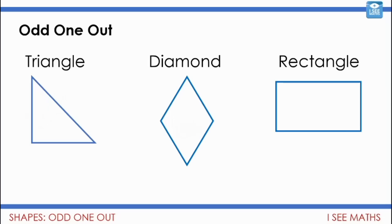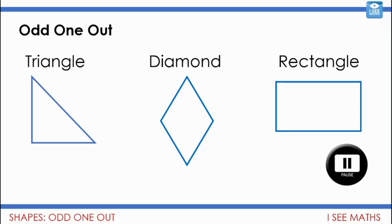Let's apply that to our shapes. A triangle, a diamond, a rectangle - which one's the odd one out? Can you think of why each one might be? Pause the video and see what you can come up with. Well, it must be the triangle - it's the odd one out because it's got three sides and the other two are quadrilaterals with four sides. But wait - the diamond is the odd one out because it's got obtuse angles. Actually the rectangle is the odd one out because it's got two pairs of parallel sides, whereas the diamond and triangle don't have any parallel sides.